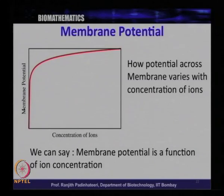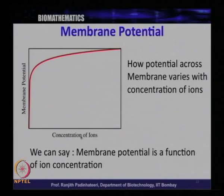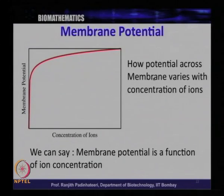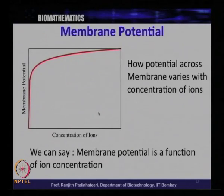Now let us look at the membrane potential example. We varied the concentration and as we vary the concentration, the potential difference across the membrane increases. The membrane potential is a function of the concentration of ions. When I say an equation, this equation describes how the membrane potential varies with concentration of ions. We can say that membrane potential is a function of ion concentration.